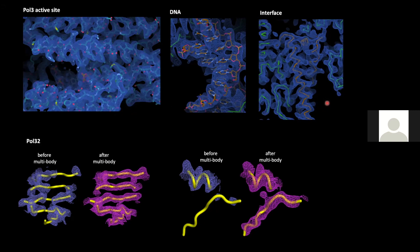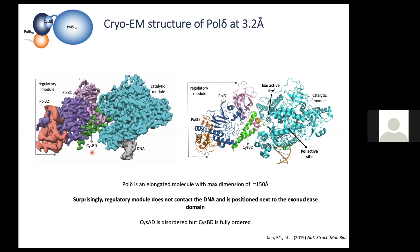Shown here are snapshots of the cryo-EM density for different regions of Pol delta. At the top is the Pol3 active site, cryo-EM density for DNA, and density for CisBD at the interface of the catalytic and regulatory modules — excellent definition both before and after multi-body refinement. Extremely striking was the improvement in density for Pol32: comparing before and after, we see significant improvement, to the point that we can now trace the complete structure including the backbone of Pol32.